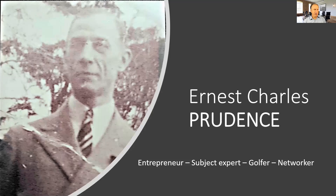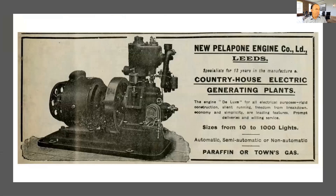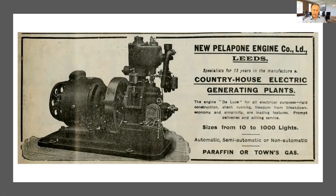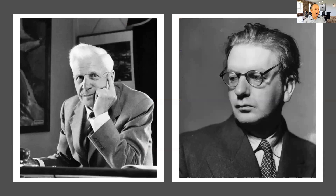Let me introduce you to someone — Ernest Charles Prudence. What a wonderful name. Ernest was an entrepreneur, an expert at what he does, a very keen golfer, and a networker — in fact one of the world's leading experts at what he does. His LinkedIn profile would say he was the founder and managing director of the New Pelopon Engine Company in Leeds in the north of England. He was also offered a knighthood during the war for making aircraft engines more efficient so they could fly further.